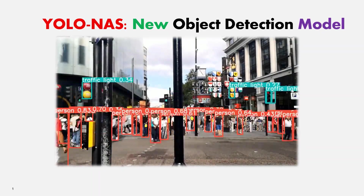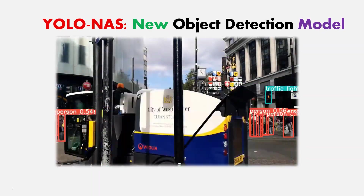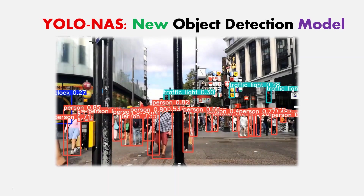Hello everyone, I have exciting news. A new object detection model, YOLO NAS, was just released today. Deci AI, an AI optimization company, has launched a new object detection model known as YOLO NAS. So let's see what YOLO NAS is and explore the key features of YOLO NAS.